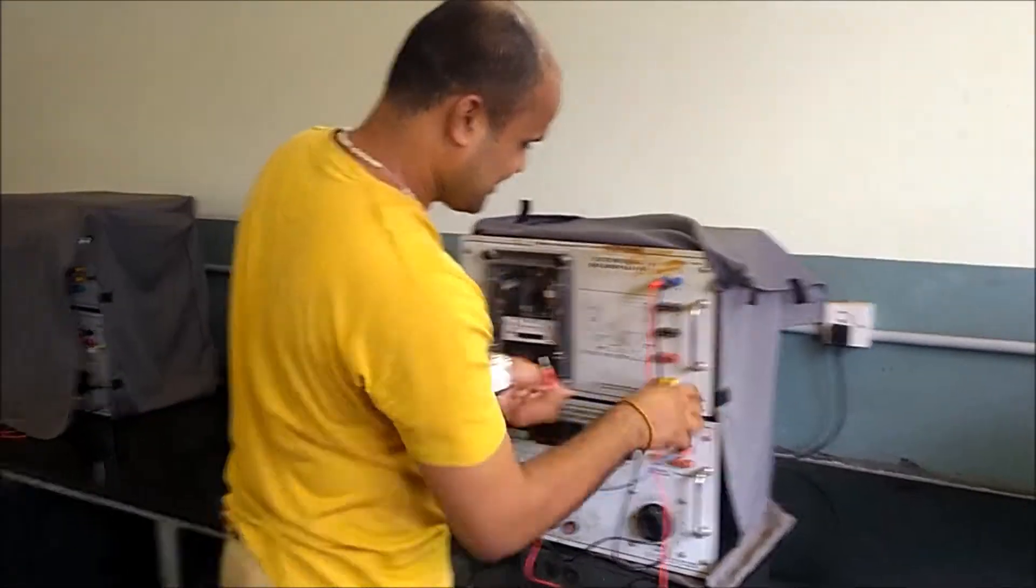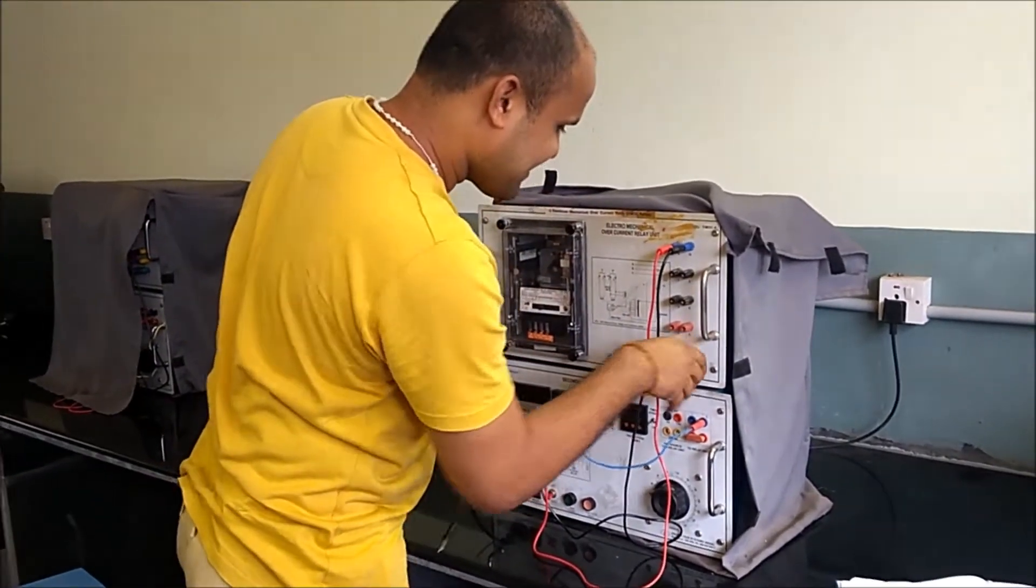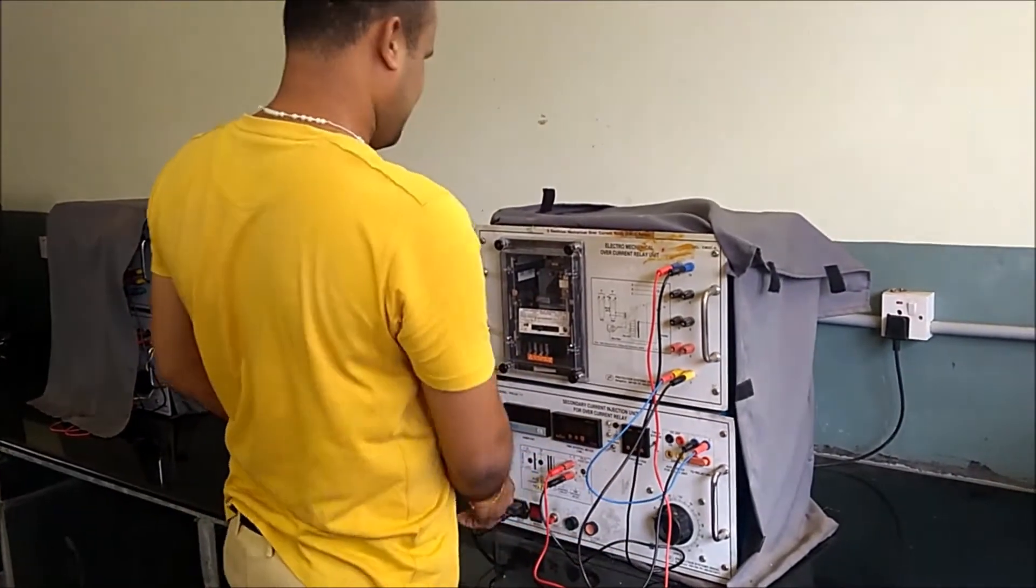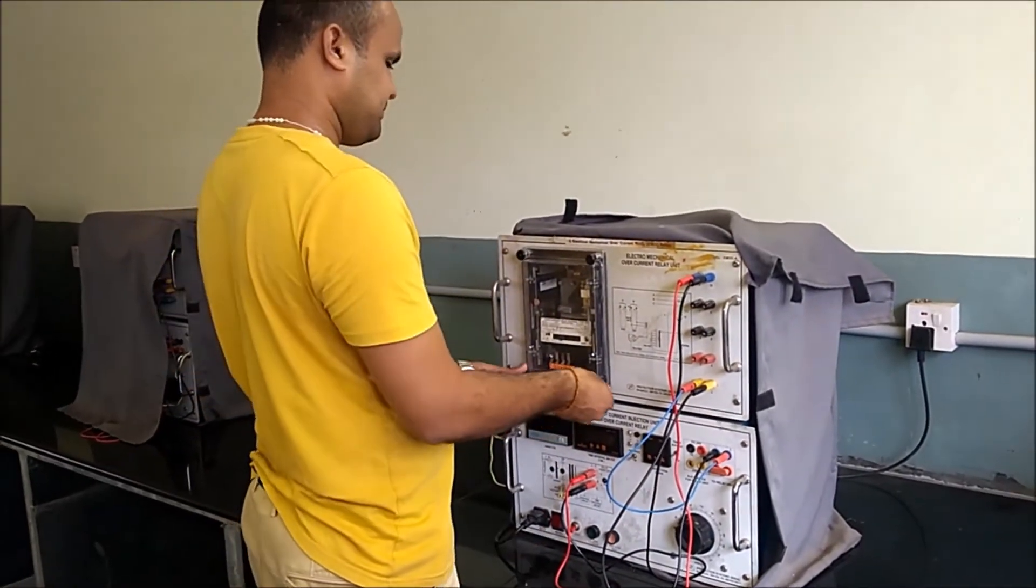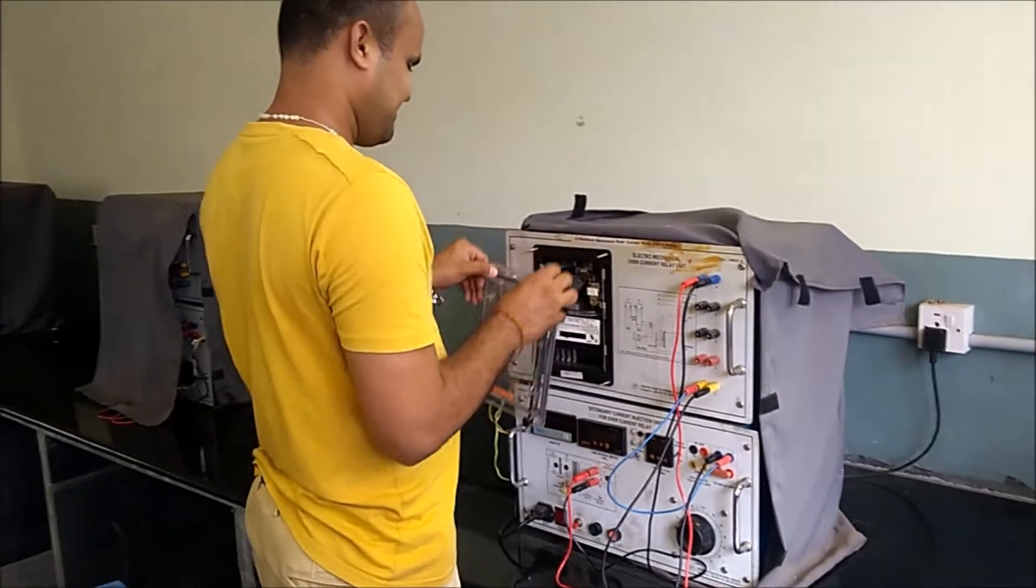The basic function of this relay is we are setting a value of current, and if the system picks up any current whose value is more than that set value, then it is treated as an overcurrent fault and the relay is calibrated in such a way to operate.